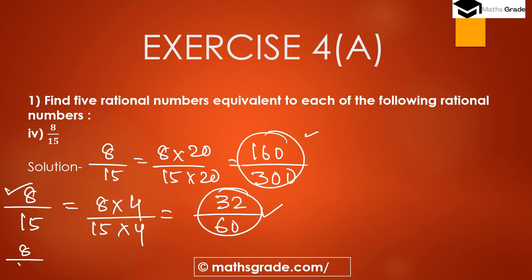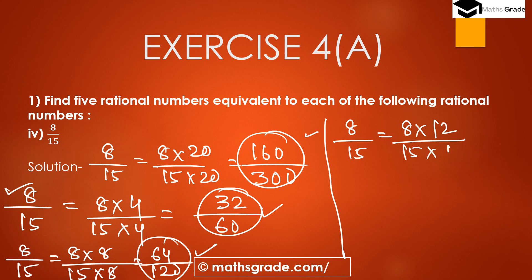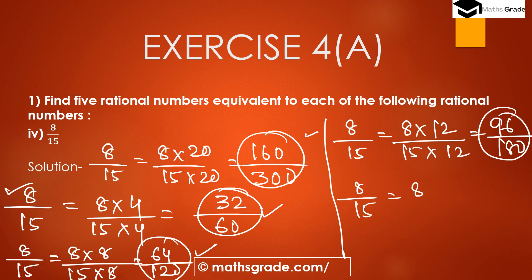For the third equivalent, multiplying 8/15 by 8: 8×8 = 64 and 15×8 = 120, giving 64/120. For the fourth, multiplying by 12: 8×12 = 96 and 15×12 = 180, giving 96/180.